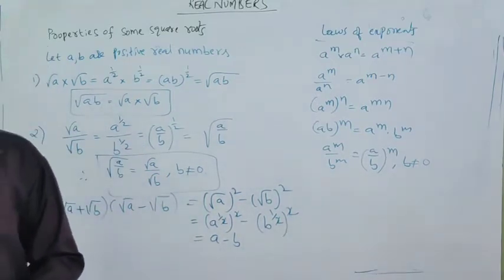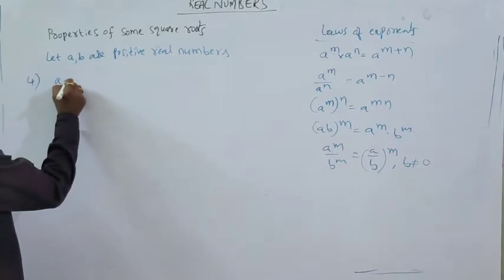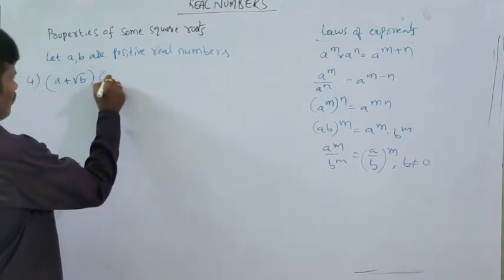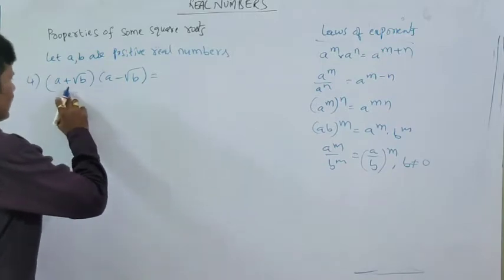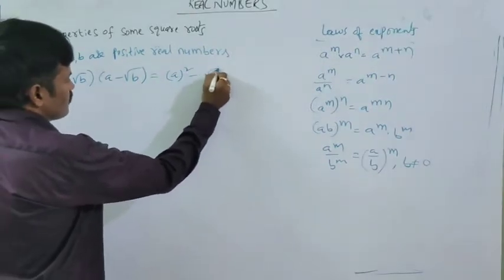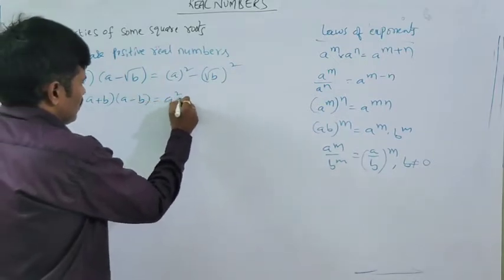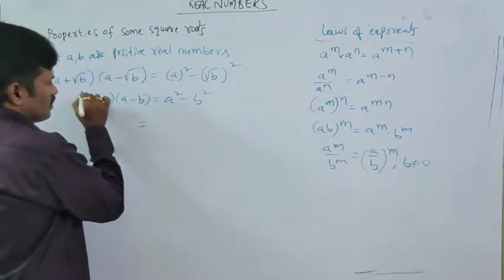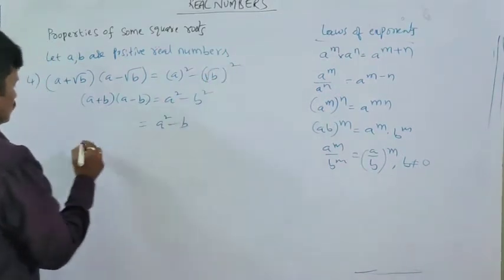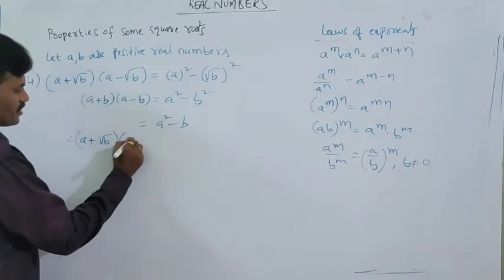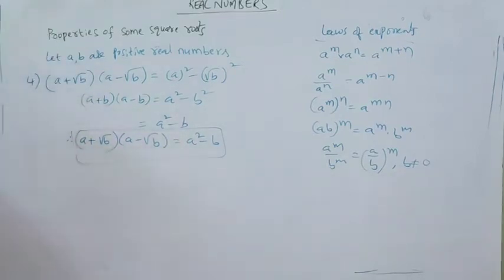The fourth property: A plus root B into A minus root B. This is also in the form of A plus B into A minus B. Applying the formula, A plus B into A minus B equals A squared minus B squared. Here, A squared remains as it is, and root B squared becomes B. So A plus root B into A minus root B can be written as A squared minus B. Very simple.